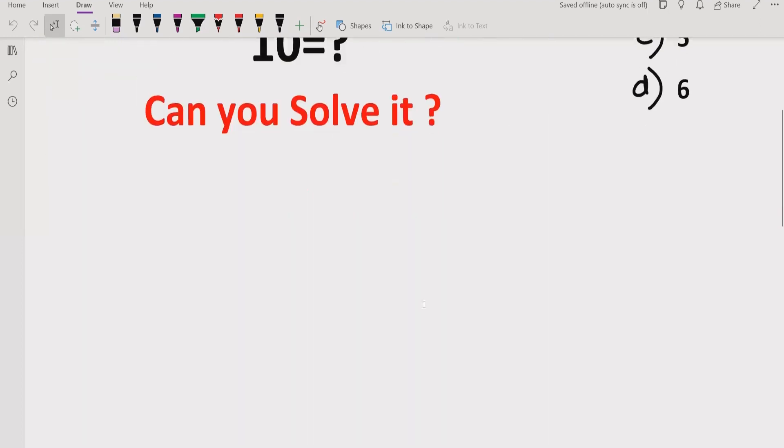Here we have 1 equals 3, 2 equals also 3, 3 equals 5, and 4 equals 4. So in this case, it seems that every number equals the number of letters in its English name.